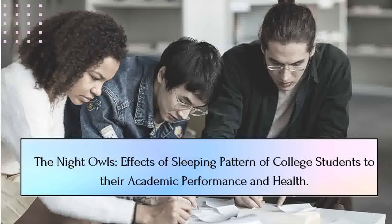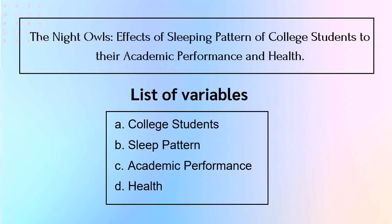Ano sa tingin mo yung mga variables? Ano yung mga pag-aaralan natin, i-manipulate natin sa given na example na ito? So we have the sleeping pattern, we have the college students, and also we have academic performance and health. Bakit ito yung ating variables? Sa ating title, 'the effects of sleeping patterns of college students' — ano ba yung pag-aaralan natin, sino ba yung pag-aaralan natin? Yun yung mga variables na tinatawag.